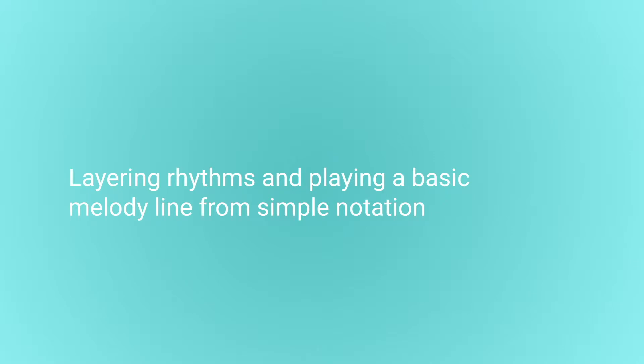This lesson is all about layering rhythms and playing a basic melody line from simple notation. What you're aiming for within each group is two different rhythms, with one pupil playing their rhythm repeatedly before then introducing another child playing a different rhythm. Pupil number three then joins in playing atmospheric sounds such as the maracas moving slowly, and the fourth member of the group will play the melody on tuned percussion following the Bare Mountain piece of music.